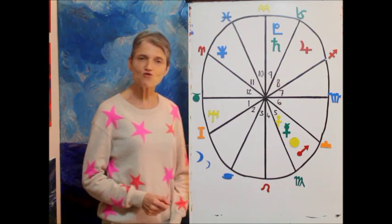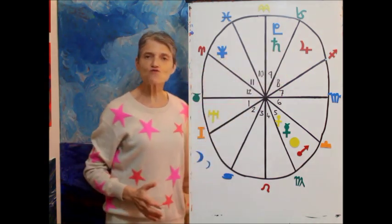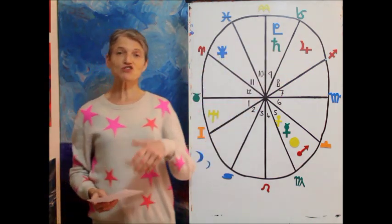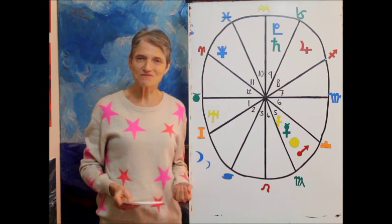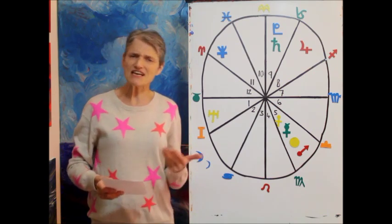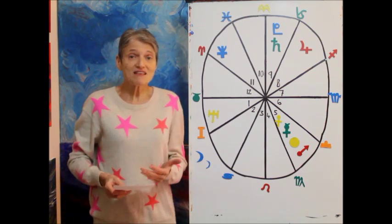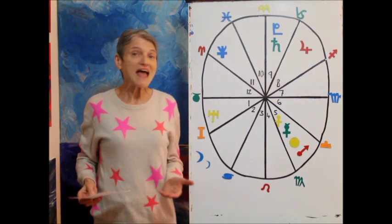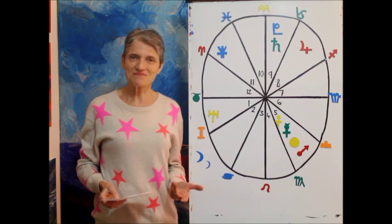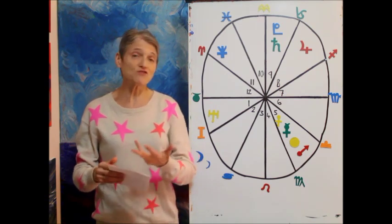Jupiter is square to Neptune and in that square energy is an opportunity for you to go beyond what you think is possible. You may have certain beliefs, I can do this, I can accomplish that, but this is encouraging you to just go beyond anything you can imagine. So let's say you want abundance, you want that partner in your life, you want good health.